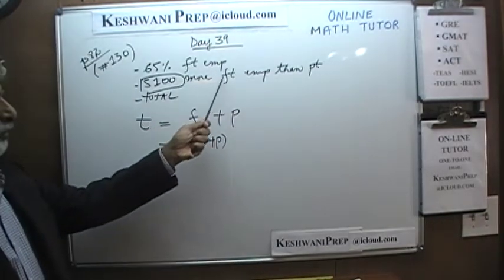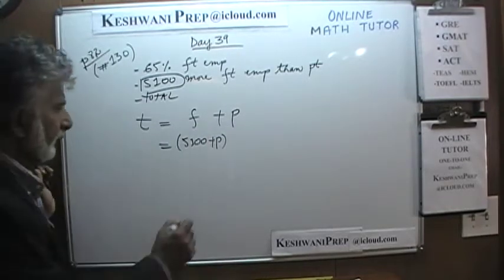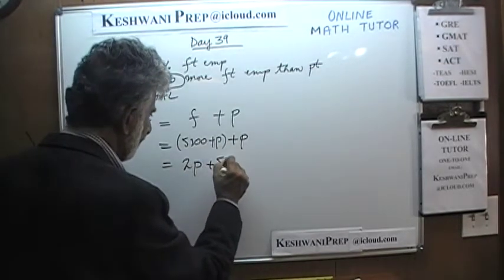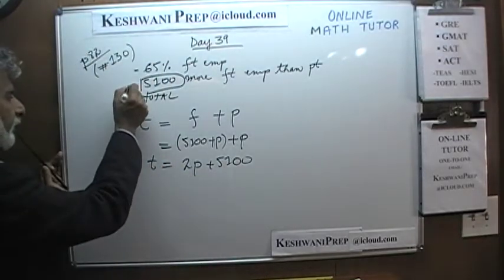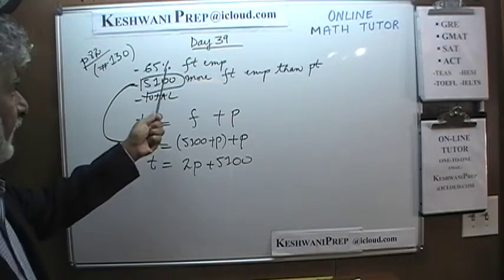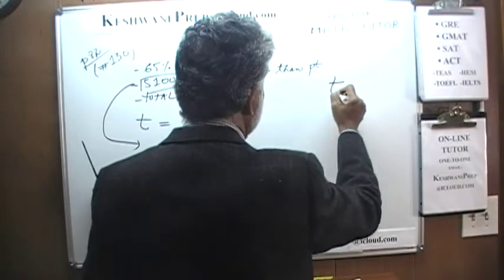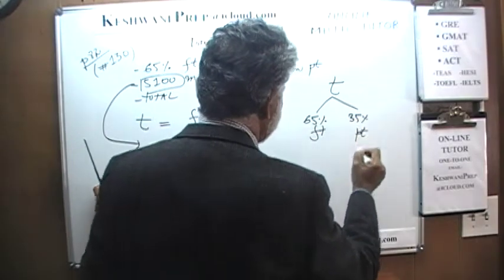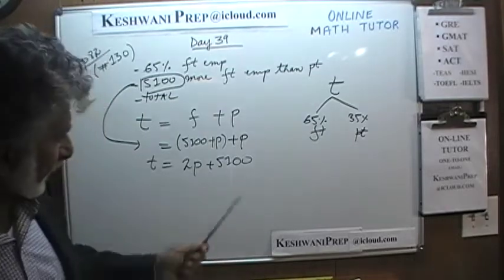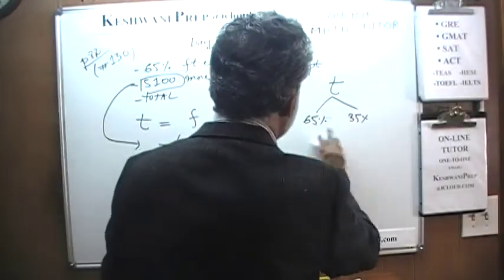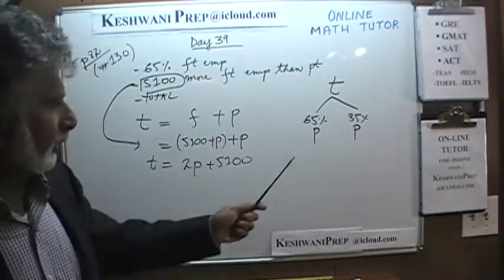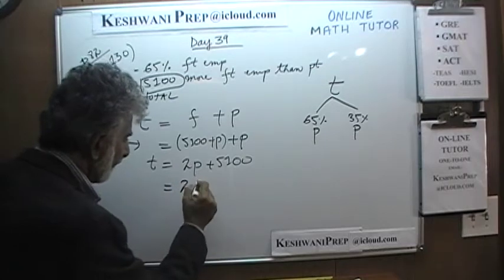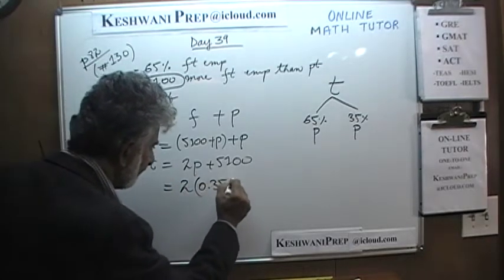Whatever the part-time number is, if you add 5100 you get full-time. So it's 2P plus 5100 equals total — that's our first equation. The second equation tells us the total employees split into 65% full-time and 35% part-time. Part-time represents 35% of T, so we can replace that: 2 times 0.35T plus 5100 equals T, giving us 0.7T plus 5100 equals T.